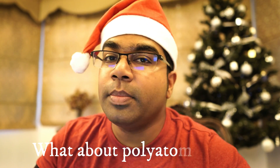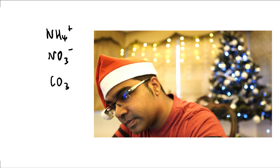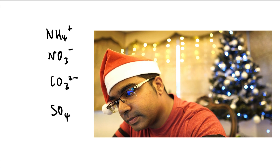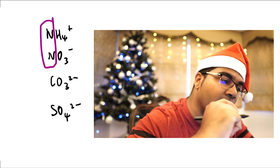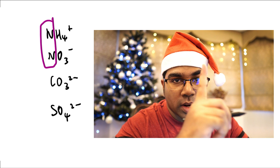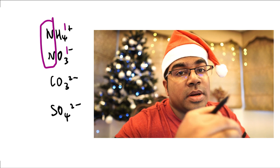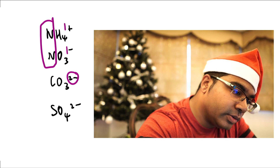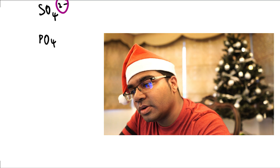This is the trick for monoatomic ions. What about polyatomic ions? The most common polyatomic ions you'll come across are the ammonium ion, the nitrate ion, the carbonate ion, and the sulfate ion. The ions beginning with the letter N — ammonium and nitrate — have a magnitude of 1: ammonium is 1 plus and nitrate is 1 minus. The other common polyatomic anions, carbonate and sulfate, both have a 2 minus charge. There is also the less common phosphate ion, PO₄, which has a charge of 3 minus.